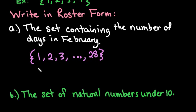So this is how we would write the set containing the number of days in February in set notation: {1, 2, 3, ..., 28}.